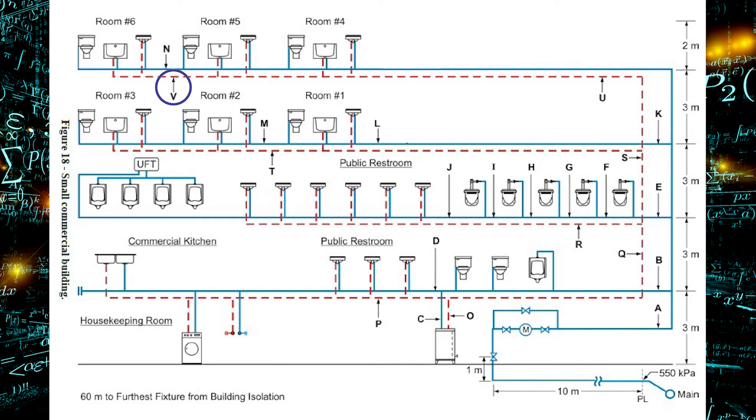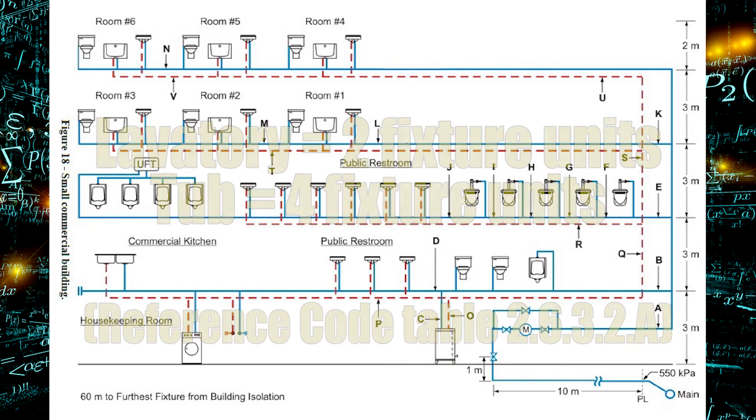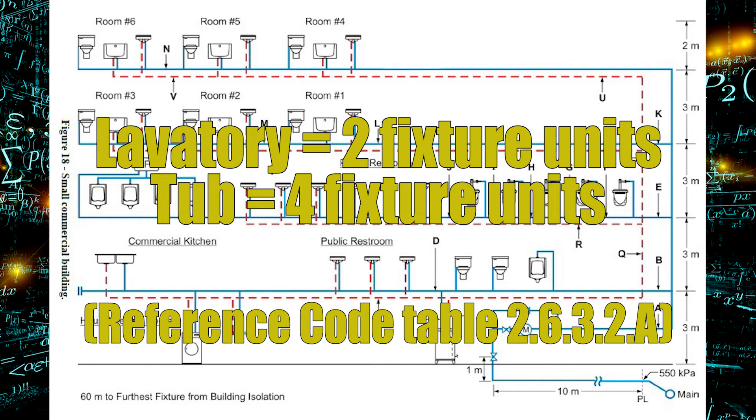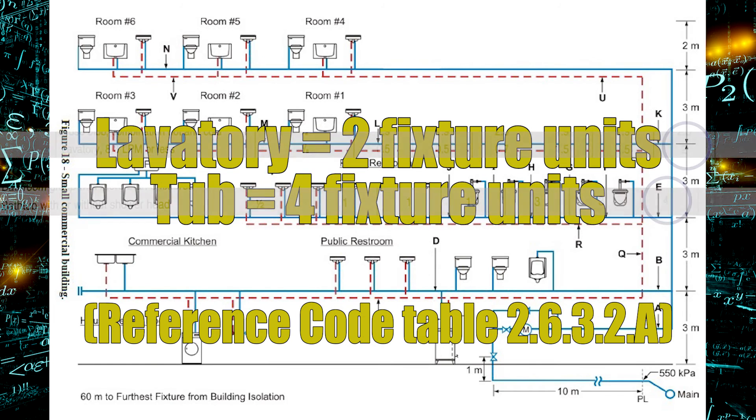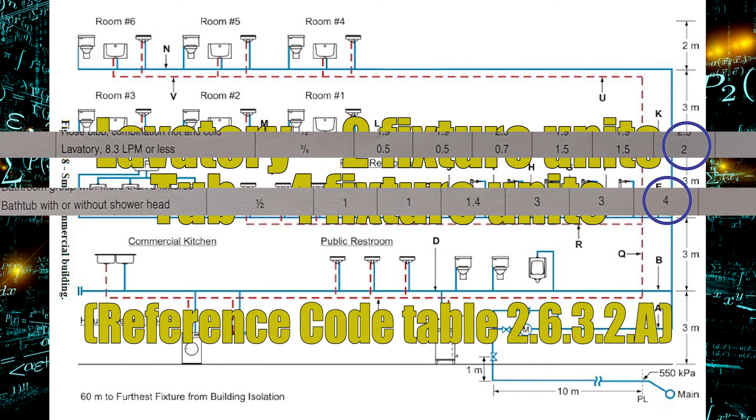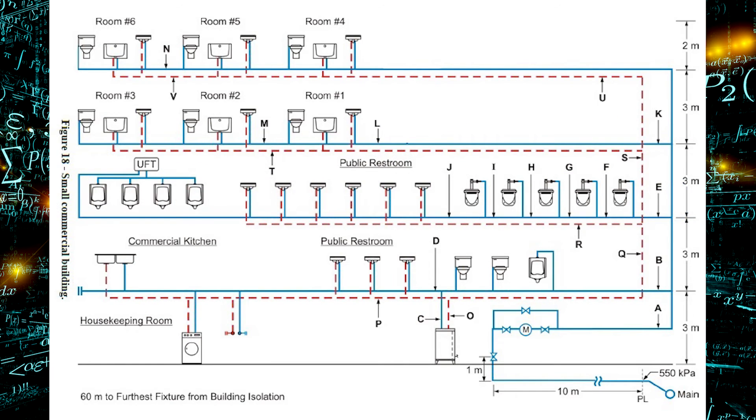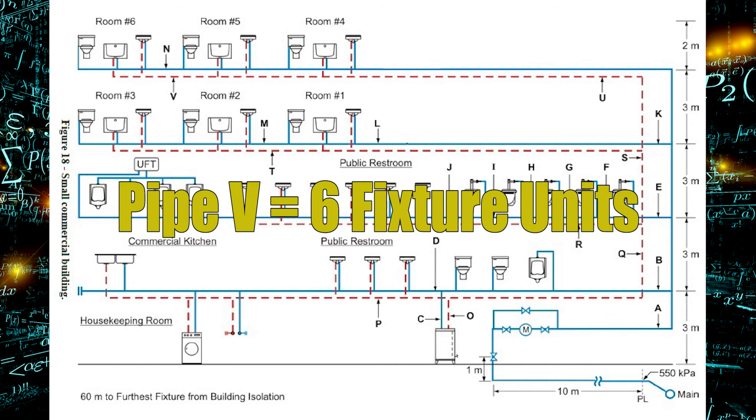And let's look at pipe V. Pipe V is the hot water piping, and it is serving a lav and a bathtub. All lavs in this building are 8.3 liters per minute or less, and the bathtub is just a bathtub with or without shower head. The lav is 2 fixture units. The bathtub is 4 fixture units, as can be seen on table 2632A right here. Pipe V needs to supply both the bathtub and the lav, so 4 plus 2 equals 6 fixture units.